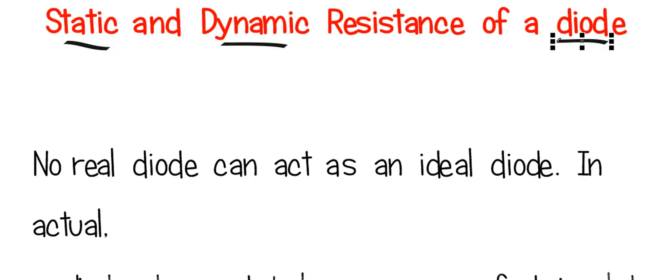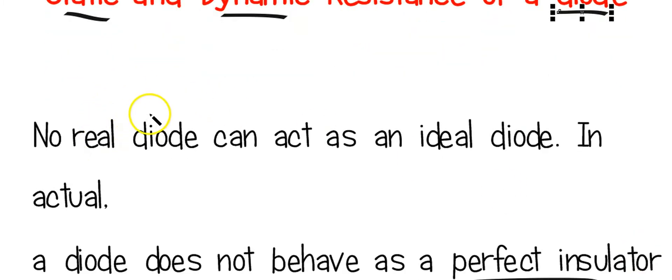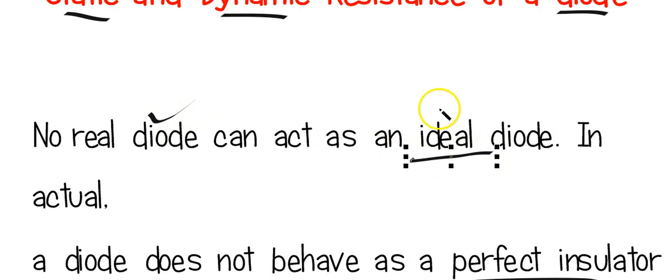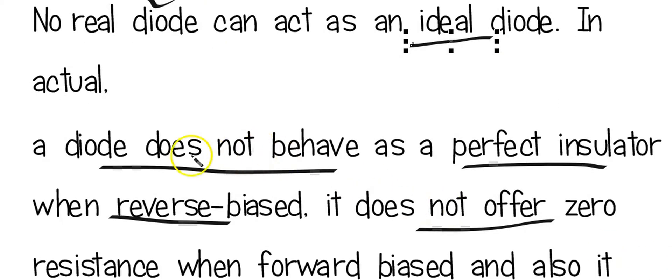Now we know very well, a real diode cannot be ideal. What are the ideal conditions? The ideal diode has zero resistance when forward biased and infinite resistance when reverse biased.